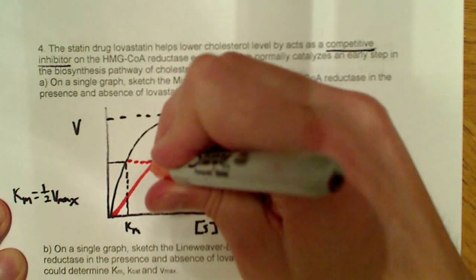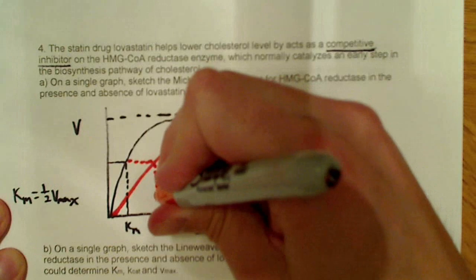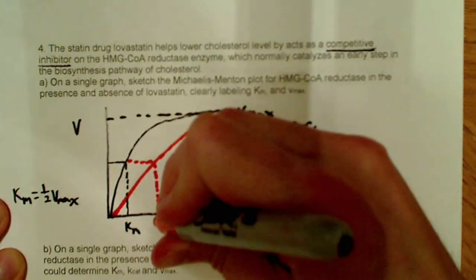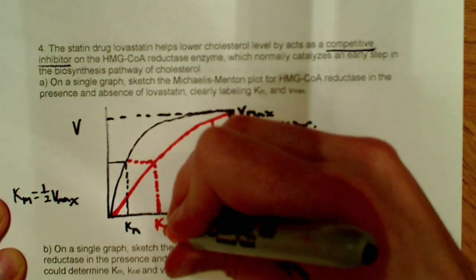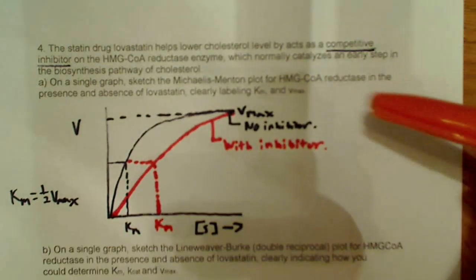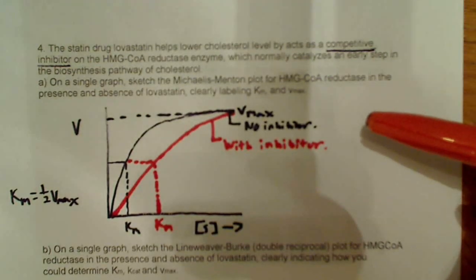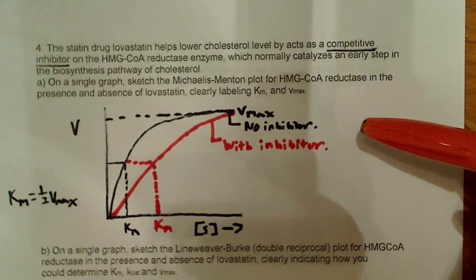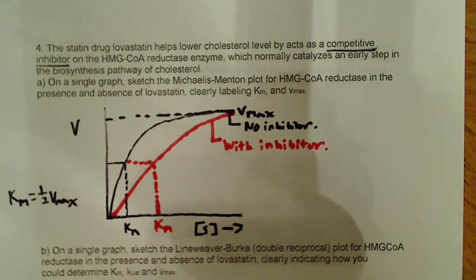And that Vmax is going to be, I mean, rather, Km is going to be further. Remember, the Km increases. Why does the Km increase? Because we have some inhibitor competing with the substrate at the active site for binding to the active site. So, the Km is going to increase. It's going to require more substrate to reach the same one-half Vmax level. So, that's how you would answer that part of the question.